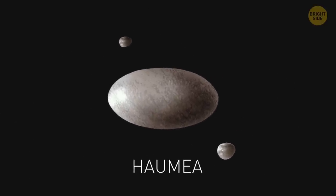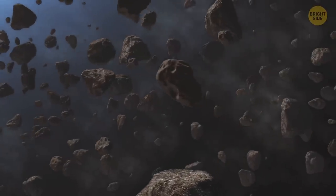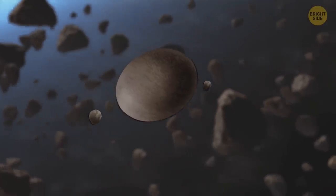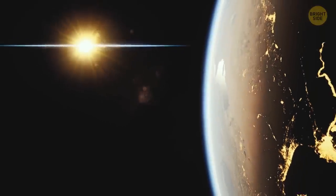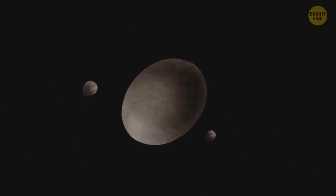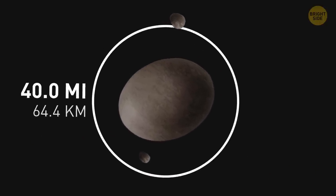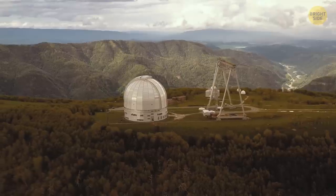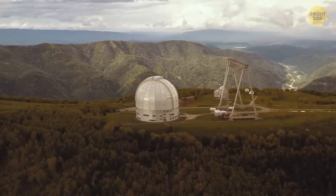Haumea, a dwarf planet orbiting the Kuiper belt, has a bizarre elongated shape and two moons. The day on this planet lasts four hours, making it the fastest spinning large object in the solar system. But the most mysterious thing about Haumea is that the planet has a thin 40-mile-wide ring circling it. Astronomers haven't managed to figure out how or why it appeared around the dwarf planet.